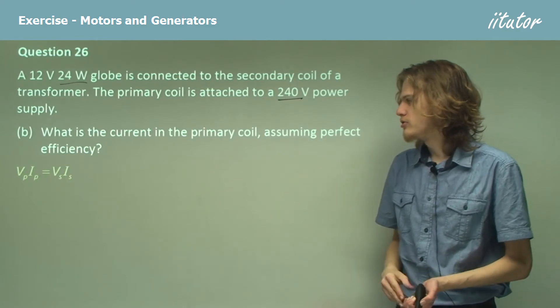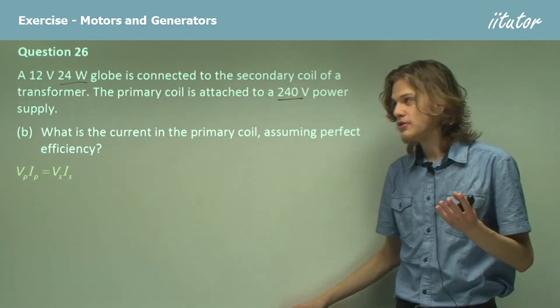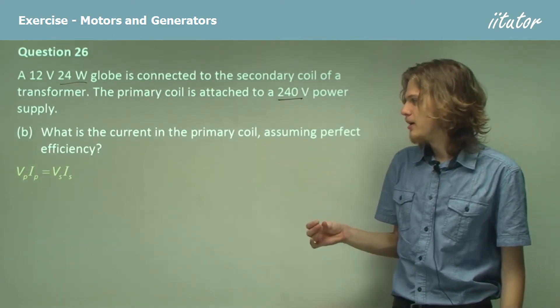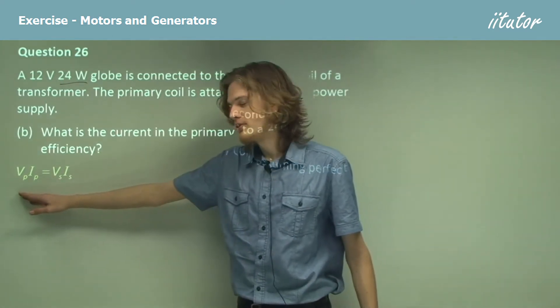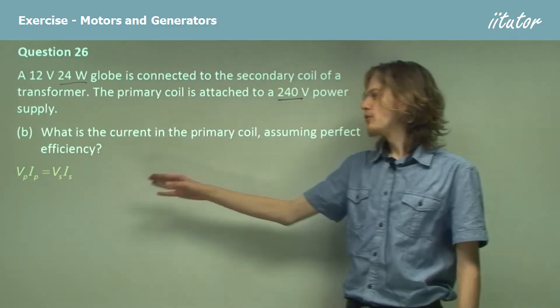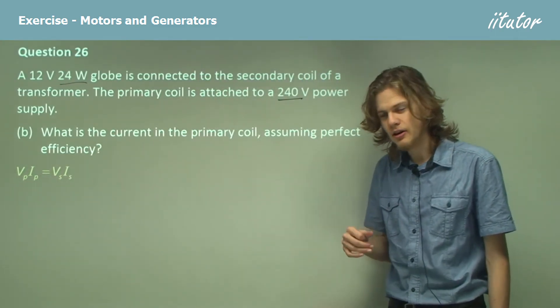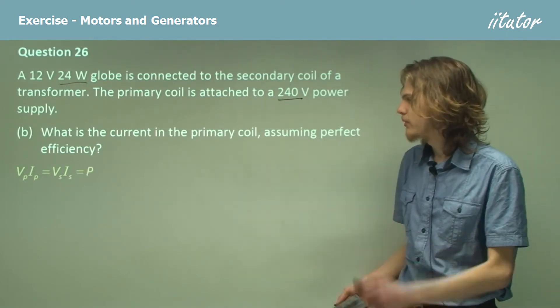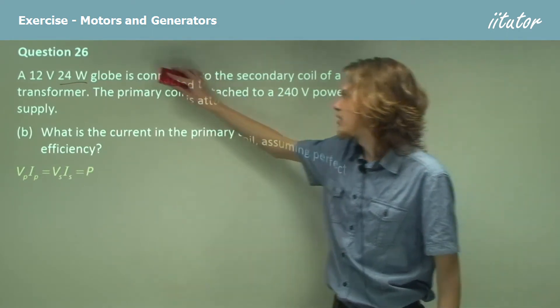So we know that the power is going to be the same, so in fact we can take out the 24 watts entirely and just say that the primary voltage times the primary current will equal the secondary voltage times the secondary current, right? Because that's equal to the power.